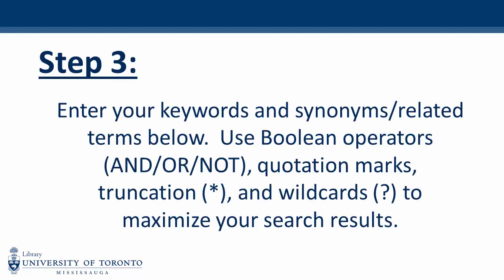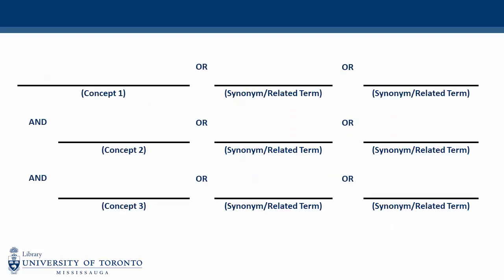Once you've brainstormed all of your synonyms and related terms, you'll be able to move on to step three of the worksheet, which asks you to create a search string using Boolean operators and other special characters. Don't worry if you've never heard of a Boolean operator — we explain it later in the video. Creating a search string with your keywords is the most efficient way of searching a database or the library catalog because it gives you more control over your search results.